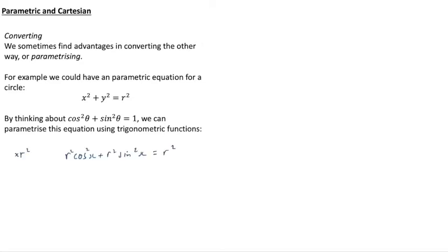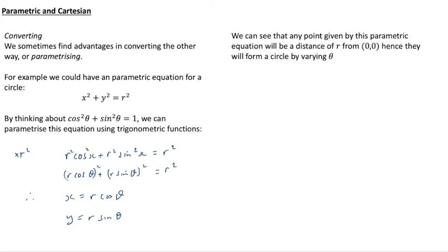So if we multiply cos²θ + sin²θ = 1 by r², that gives us r²cos²θ + r²sin²θ = r². We can then put brackets on those terms on the left hand side so we have (r cos θ)² + (r sin θ)² = r². And that allows us to say well therefore we will parameterize this by saying we let x = r cos θ and we let y = r sin θ. So we might be able to see that any point given by this parametric equation will be a distance of r from zero and that means that if we collect all the points that are a distance r from zero they're going to give us a circle.